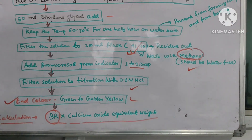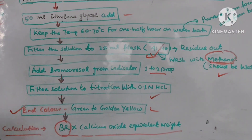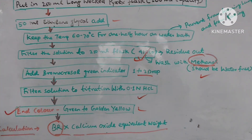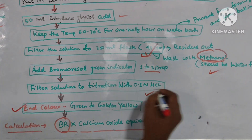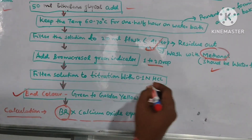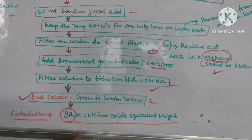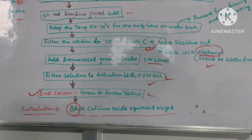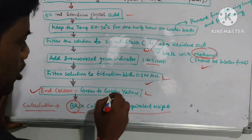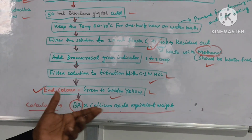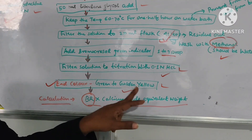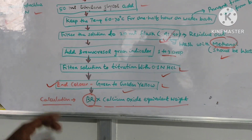Then add bromocresol green indicator — one to two drops — when going to titration. Once the filter is complete and ready for titration, titrate with 0.1N HCl. When titration starts, note that the color should change from green to golden yellow. When the golden yellow color arrives, stop the titration — that means the titration is completed.